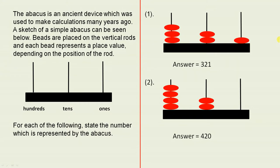For each of the following, state the number which is represented by the abacus. Now here, if you have any type of bead on here, they are ones, so each bead represents 1. Any beads here, each individual bead represents 10. And for the beads on this rod, each bead represents 100.